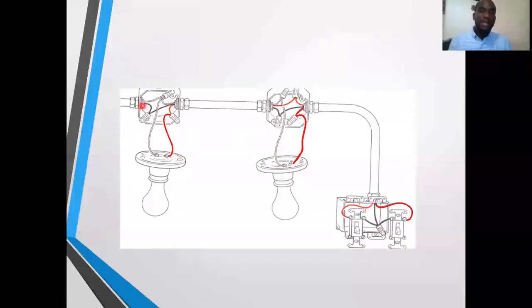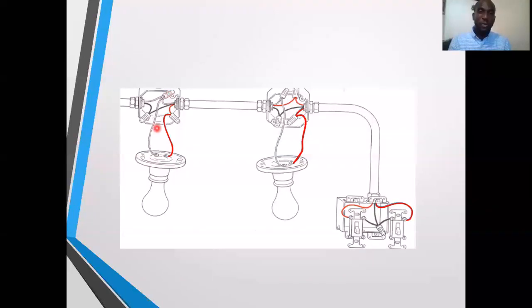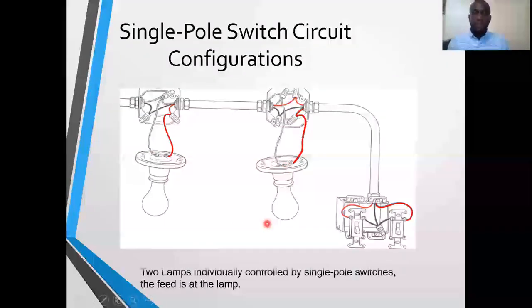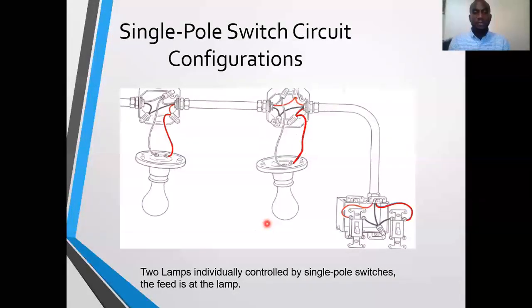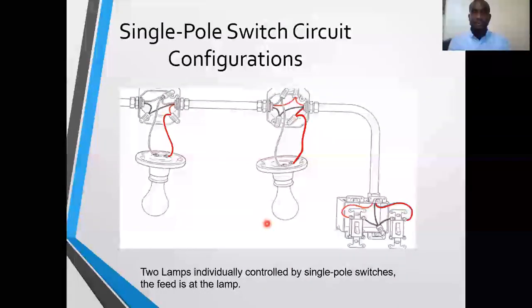From the source, we will splice the white or share the white, connect it to the silver terminal and then send it through to be connected to the next silver terminal on the opposite lamp. So there you have it. Two lamps individually controlled by single pole switches and the feed is at the lamp.